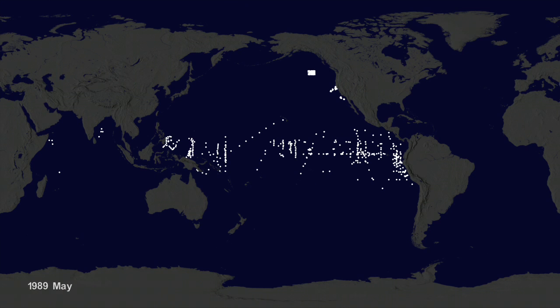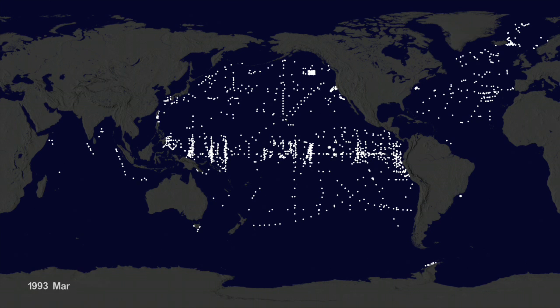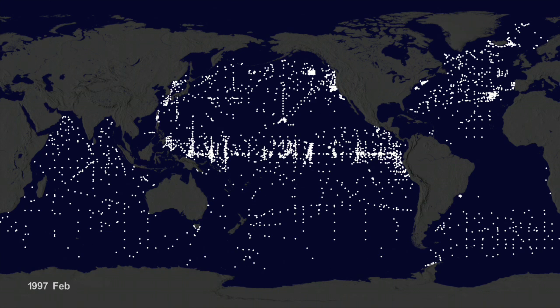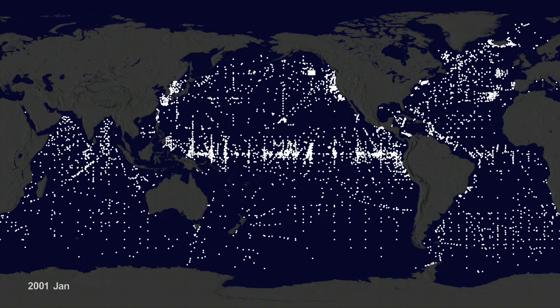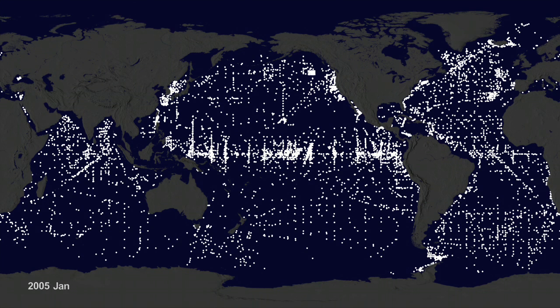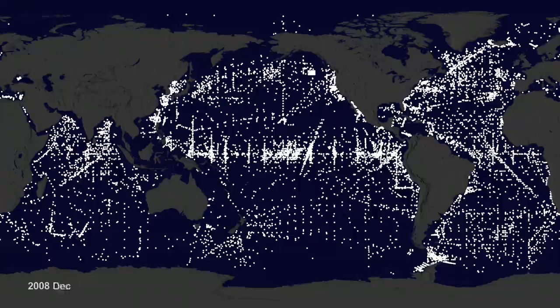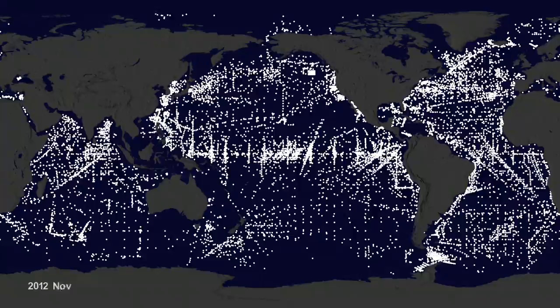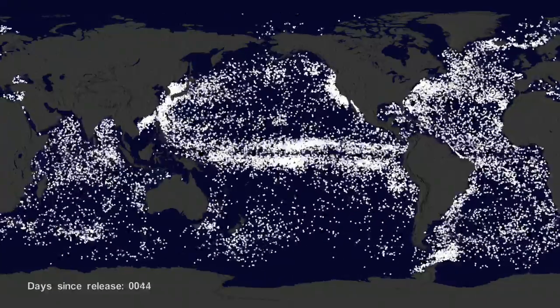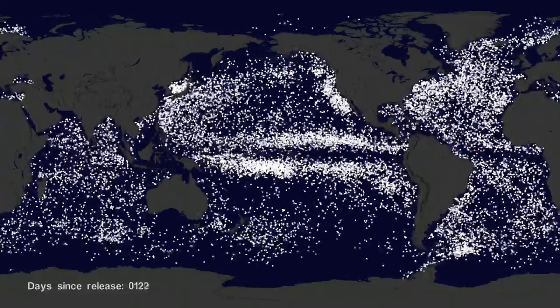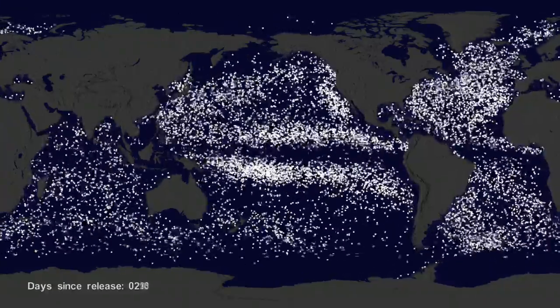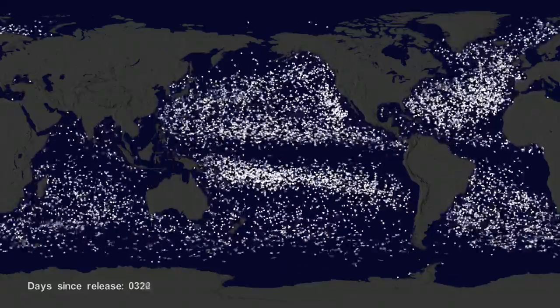Interesting patterns appear all over the place. Lines of buoys are due to ships and planes that released buoys periodically. If we let all the buoys go at the same time, we can observe buoy migration patterns.